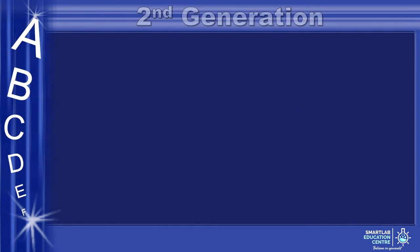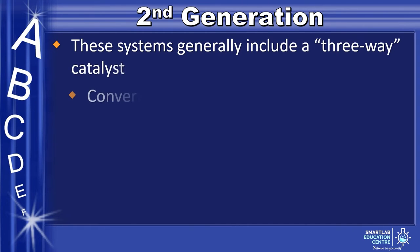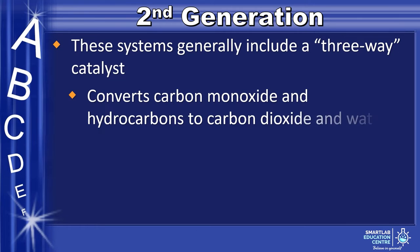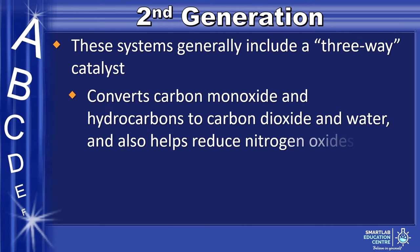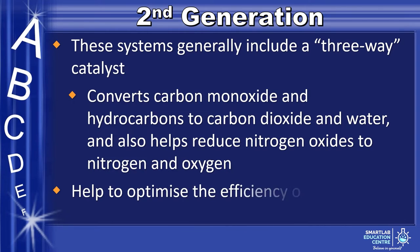For the second generation catalysts, they included a three-way catalyst, which converts carbon monoxide and hydrocarbons to carbon dioxide and water, and also helps reduce nitrogen oxides to nitrogen and oxygen. Overall, helping to optimize the efficiency of the catalytic converter.